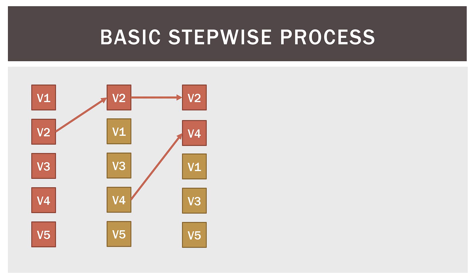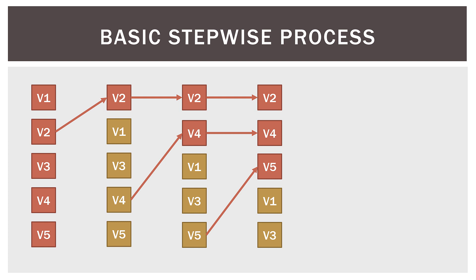Now we have V2 and V4 in the model. We pause and check: the entry of V4 could have changed V2. We ask ourselves, do they both still contribute to a significant reduction in error? If they do, they stay. If one falls below the threshold value to exit, we remove it. Let's say they're both fine. We then look at the next three variables — V1, V3, and V5 — and V5 enters the model. So now V2, V4, and V5 are in, and V1 and V3 are out. We stop and check: do any of V2, V4, or V5 fall below the threshold to exit? Because now we have three variables and the sum of squares has shifted, let's say V4 exits — it no longer meets our criteria to remain in the model.